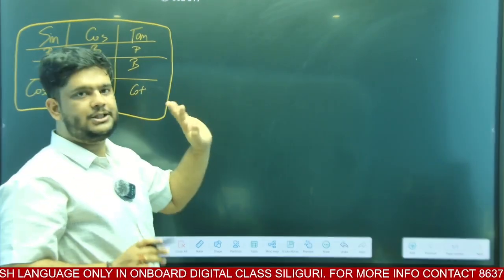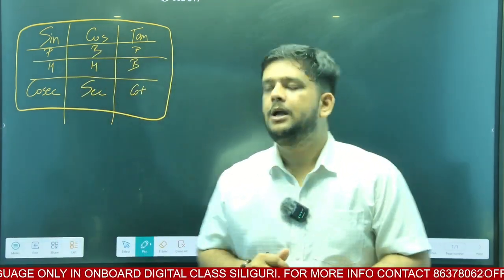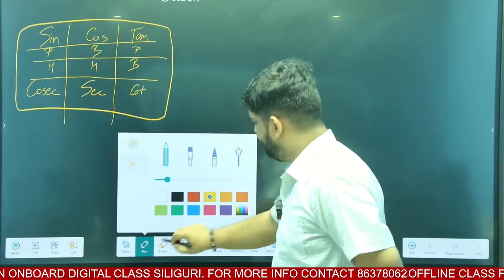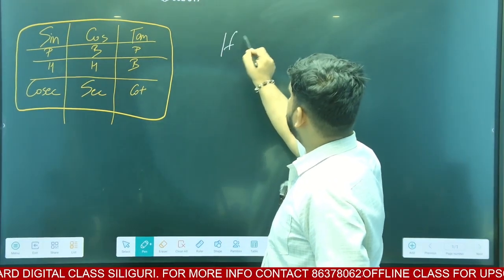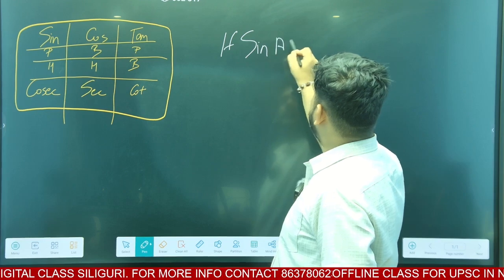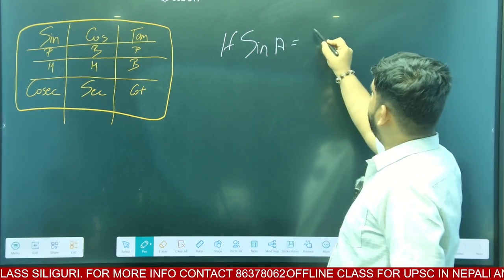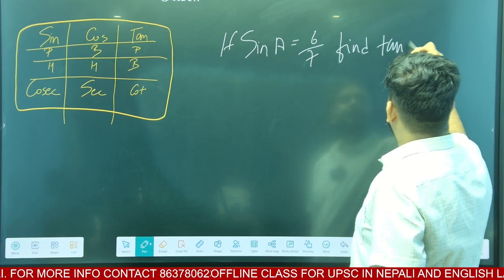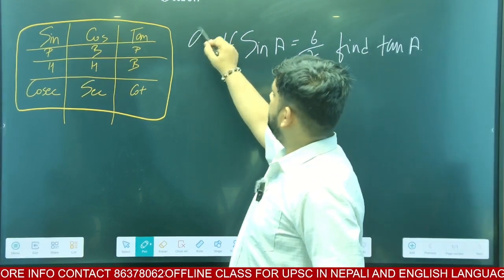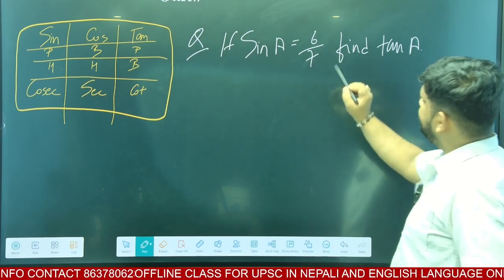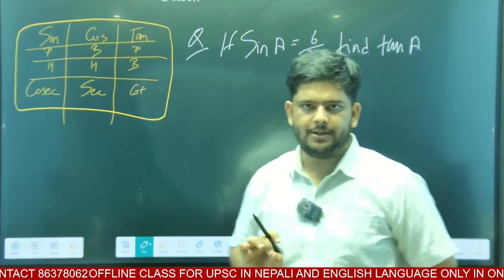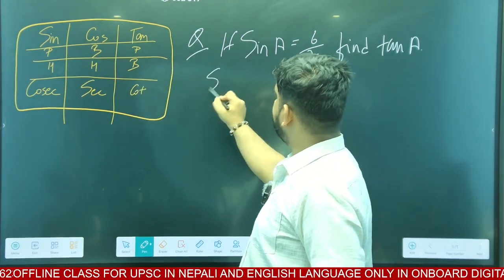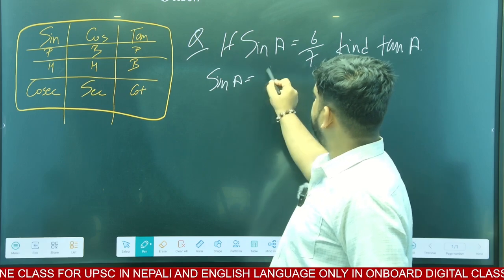With the help of this formula, let's try one question. If sin A is equal to 6 by 7, find tan A. Based on this formula, let's try. Sin A equals 6 by 7.